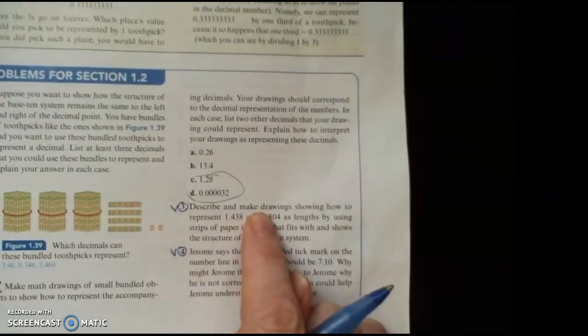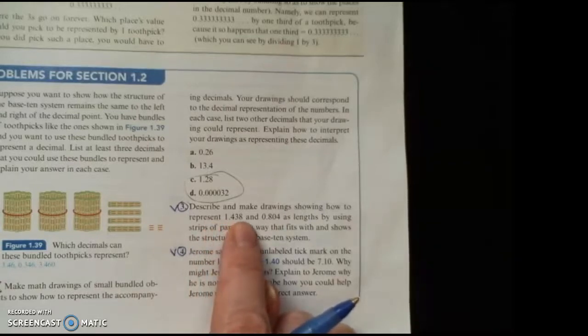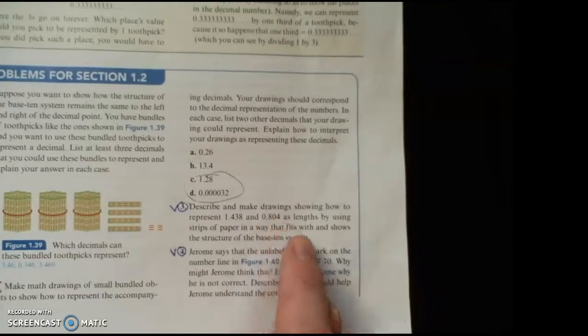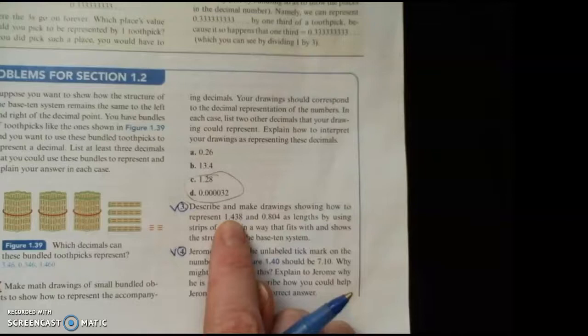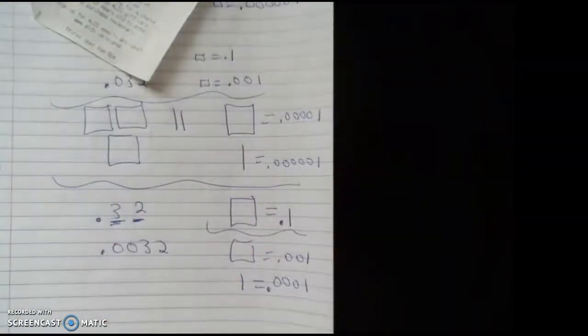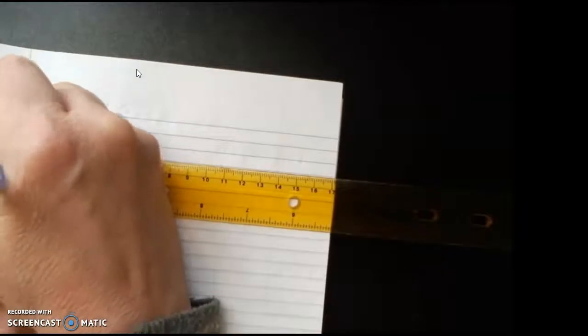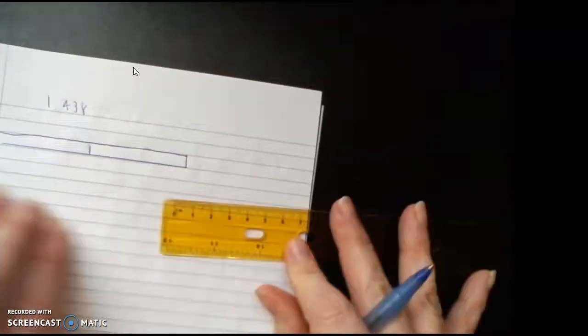All right, so let's look at problem number three in the book. We're on page 25. So it says, describe and make a drawing showing how to represent 1.438 and 0.804. So again, this would be 1 and 438 thousandths and this would be 804 thousandths. As any length by using strip paper in a way that fits with showing the structure of the base ten system. This one we should probably be able to do with a ruler. Now again, if you're going to just sketch it, you kind of want to make sure that you're at least looking to scale. So I'm going to do 1.438. So this is my, I'm going to let 10, that's going to be my one just to help me draw the scale. So this is my one.